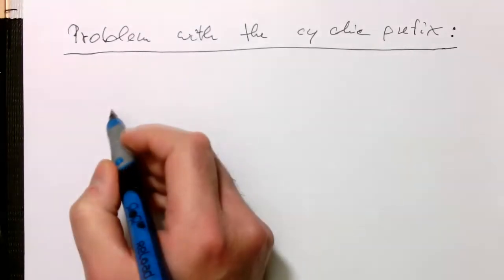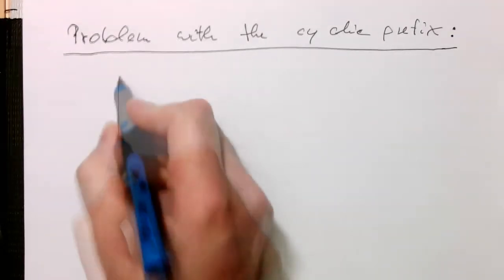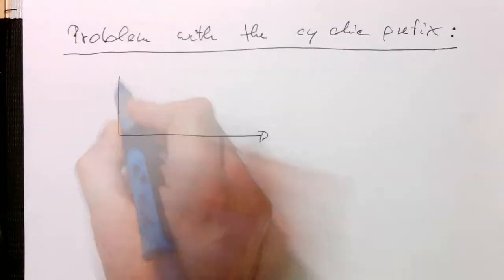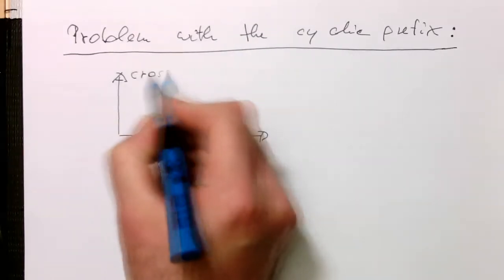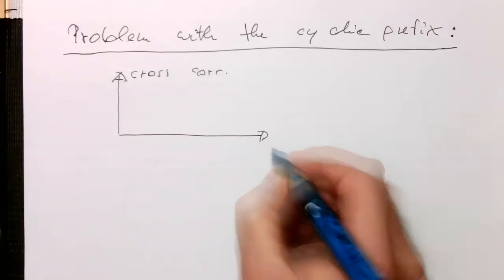This problem with the cyclic prefix is that if you're looking at the cross-correlation here, and this is here our sample number N.